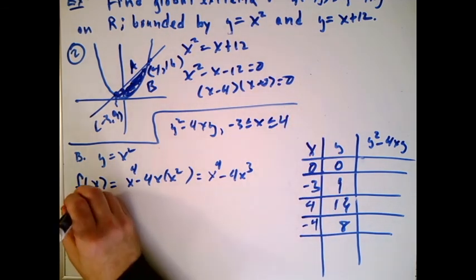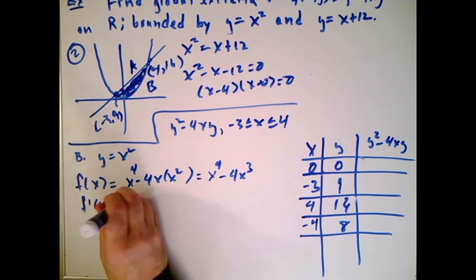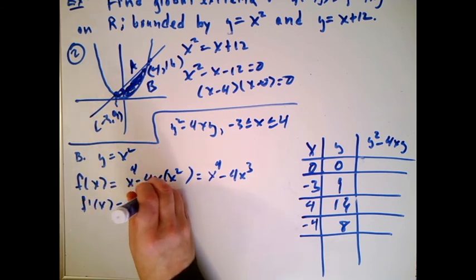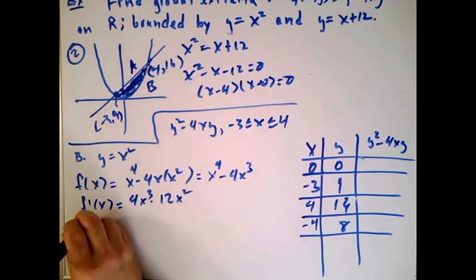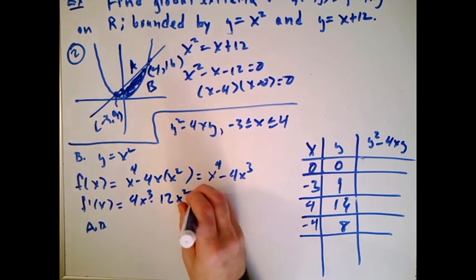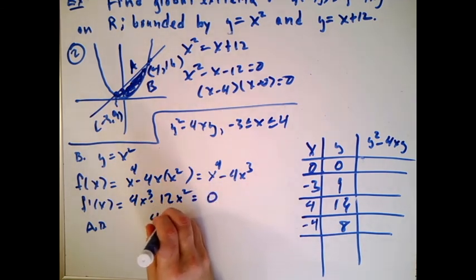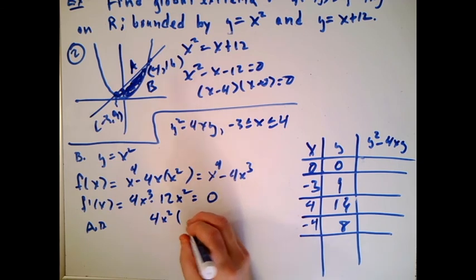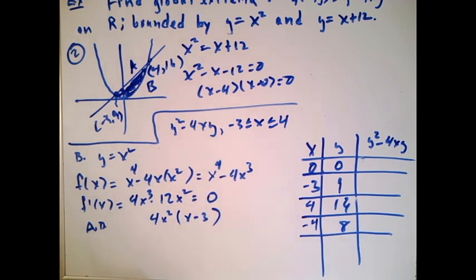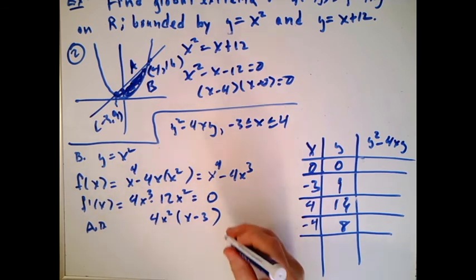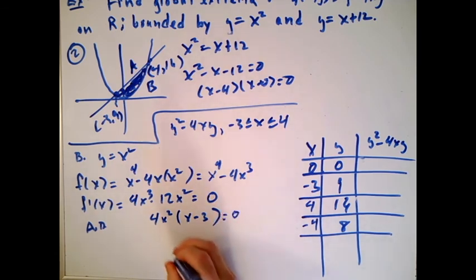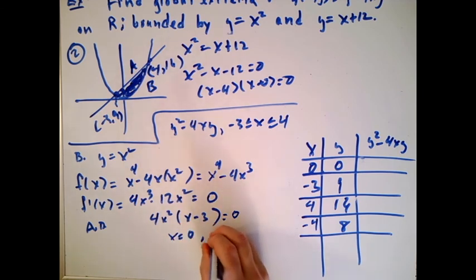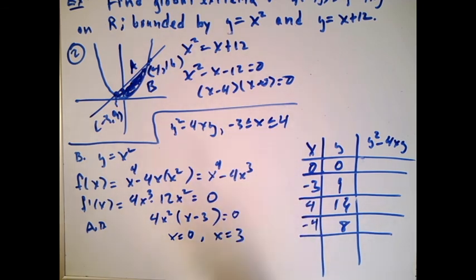Finding the critical points just like in Calc 1, the derivative is 4x³ - 12x², which is always defined. Setting equal to zero and factoring: 4x²(x - 3) = 0, giving x = 0 and x = 3. Since y = x², the point x = 0 gives y = 0 (already in our table), and x = 3 gives y = 9. Both of these are added to the table.